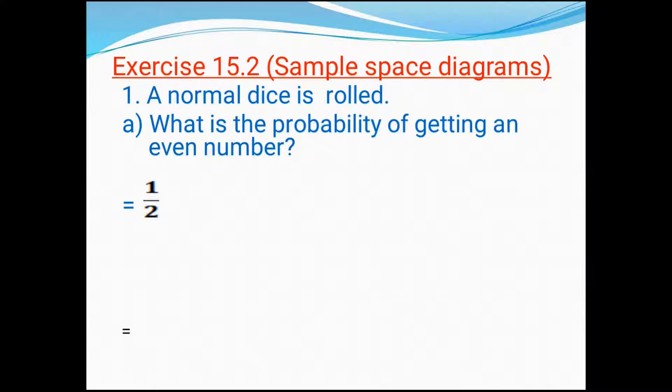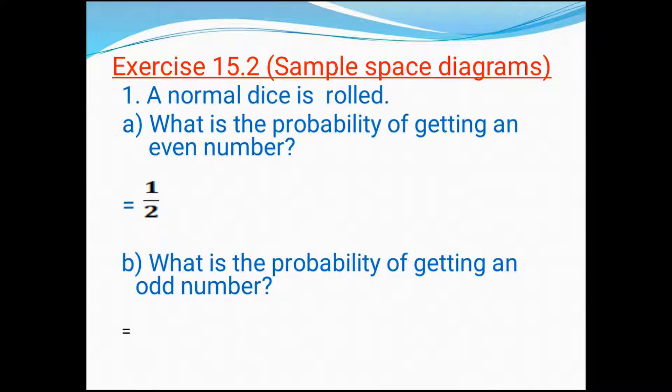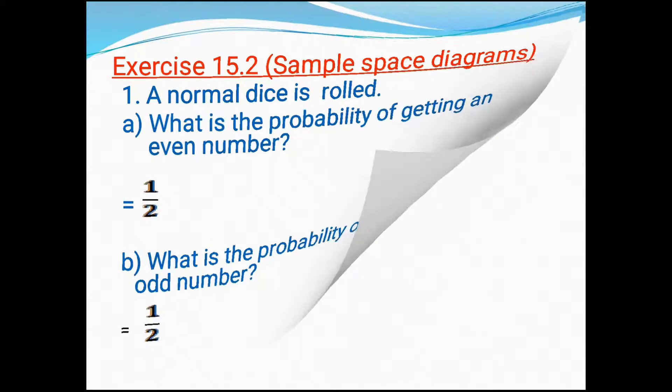Let's enter the second one. What is the probability of getting an odd number? Exactly opposite. Obviously three odd numbers: one, three, five in a dice. So same answer should be one by two.